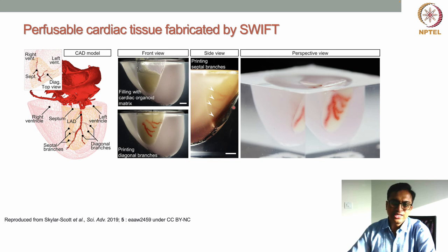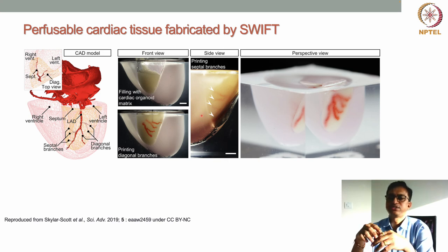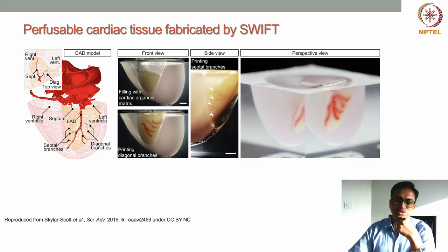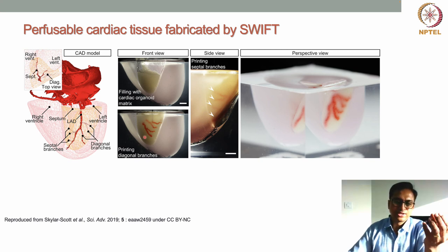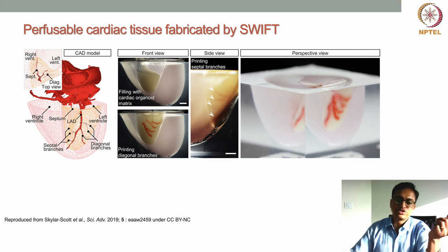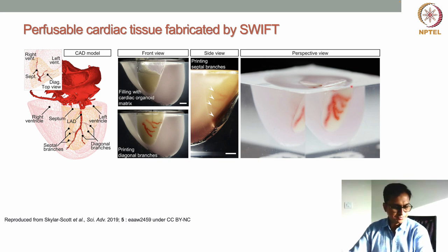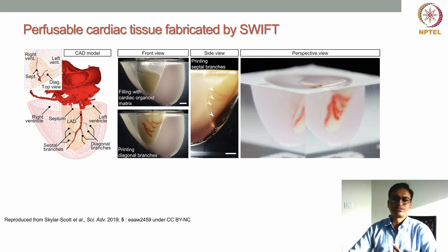The front view and side view of the printed cardiac construct were shown. The construct was allowed to set — the gel was cross-linked at 37°C — and the gelatin was taken out, resulting in perfusable channels created within the cardiac tissue.